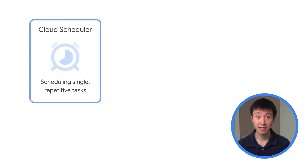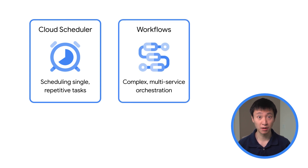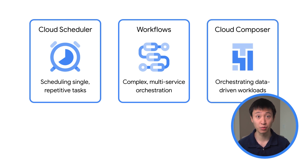Perhaps you want to automate the execution of a single service at a specific time of the day. Or maybe you have a more sophisticated approach of not just automating one service, but automating, coordinating, and monitoring multiple services over longer periods of time. There are several orchestration tools that Google Cloud has to help support your workflows. These include Cloud Scheduler for scheduling single repetitive tasks, Workflows for complex multi-service orchestration, and Cloud Composer for data-driven workloads.